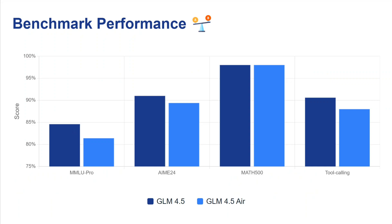Talking about benchmarks — the size is one third, but the benchmarks are almost as good. If you're not into research and don't need 100% accuracy at all times, GLM 4.5 Air can be your go-to solution. On MMLU Pro the difference is about two to three percent, AIME 24 and Math 500 are almost the same, and on tool calling the difference is not more than five percent.